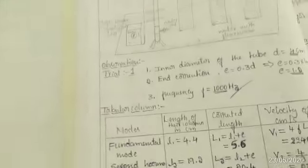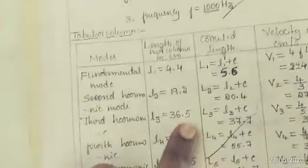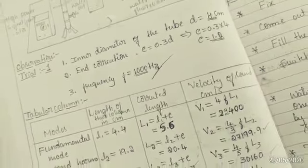Next, for second harmonic mode, it is 19.2 centimeters. I am going to call it as L2. Similarly, third harmonic, L3 is equal to 36.5. L4 is 54.5 centimeters. L5 is 73.5.